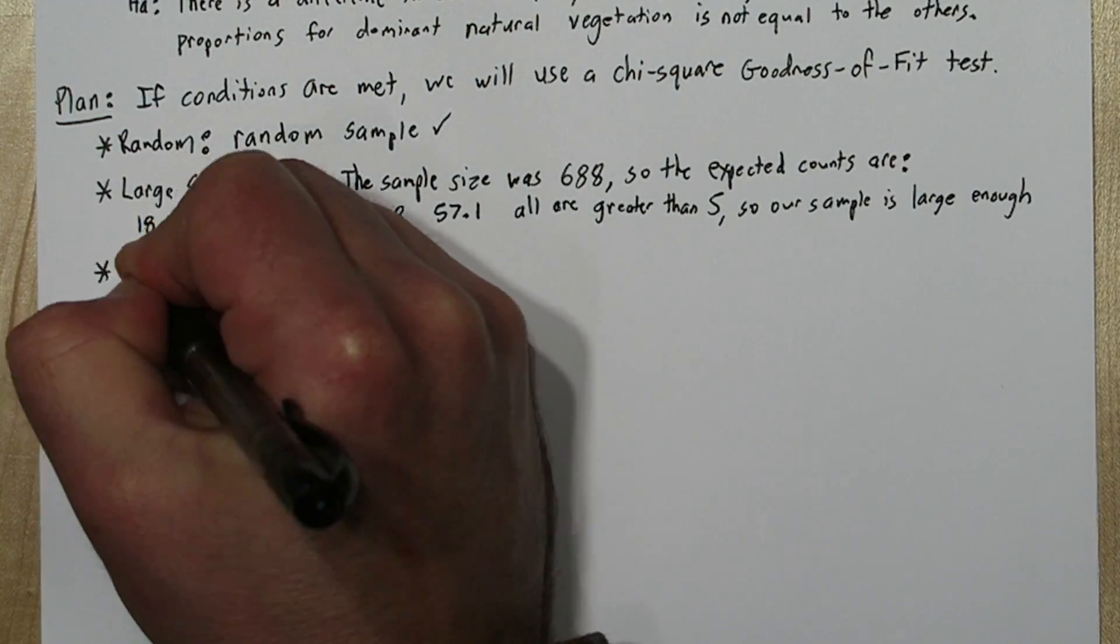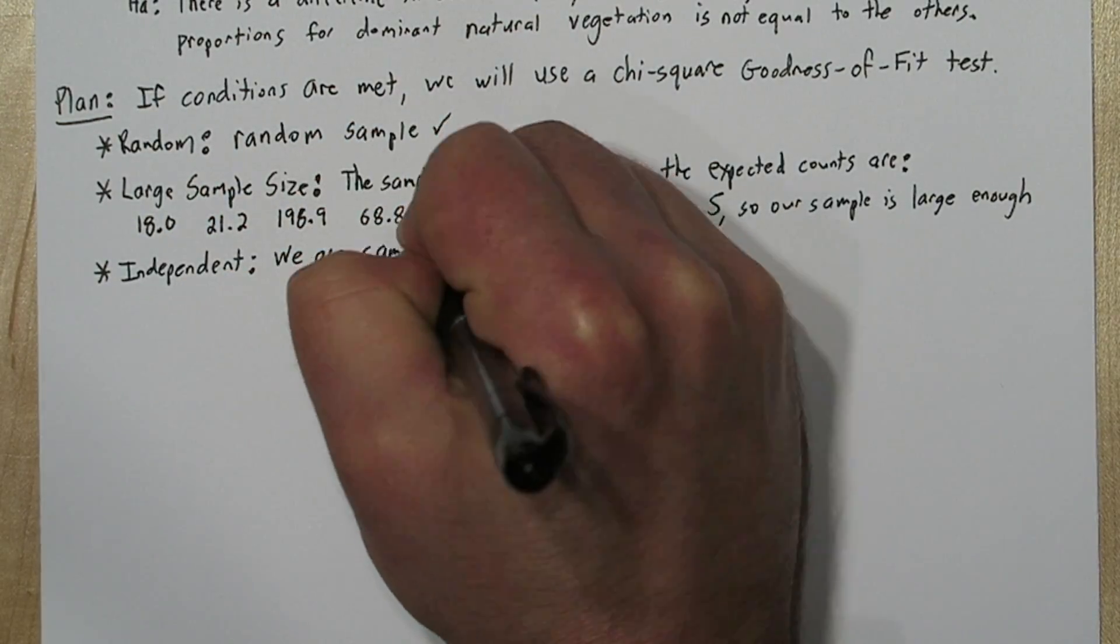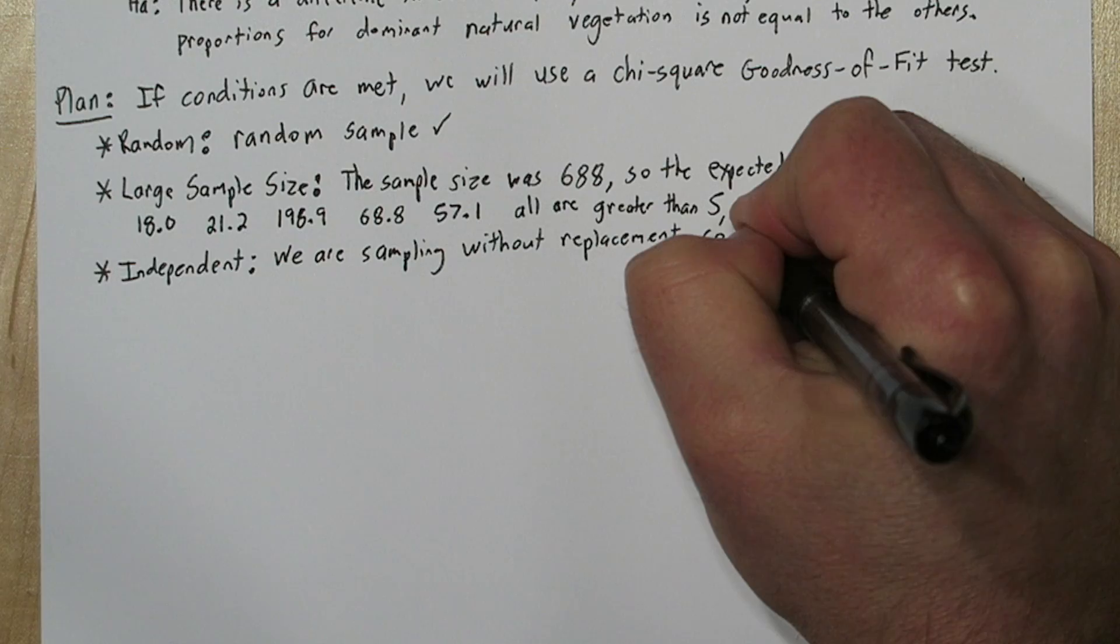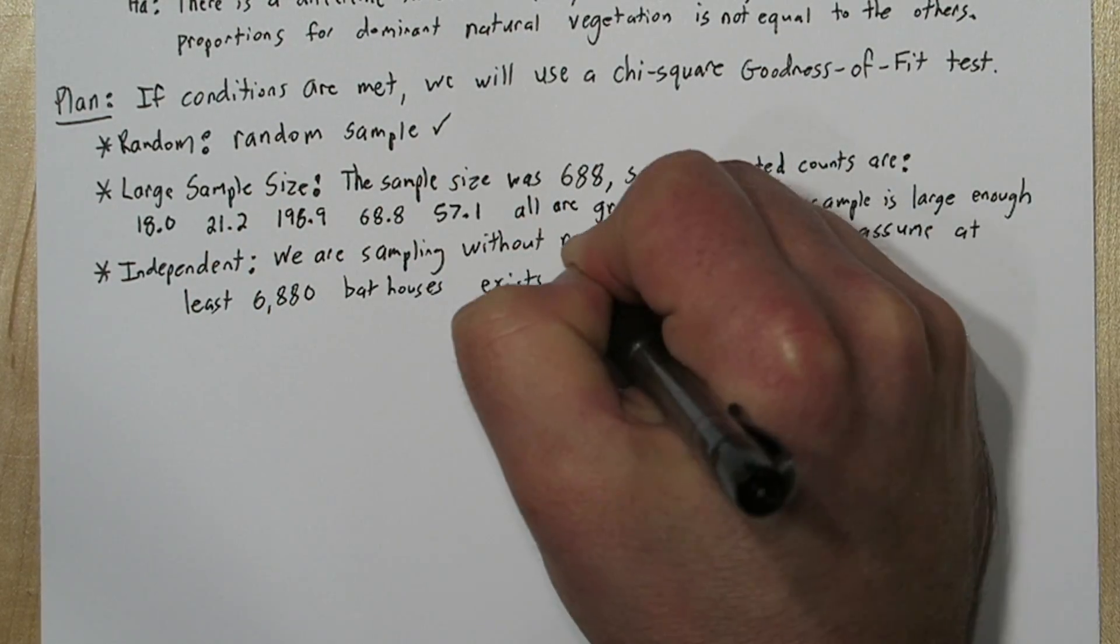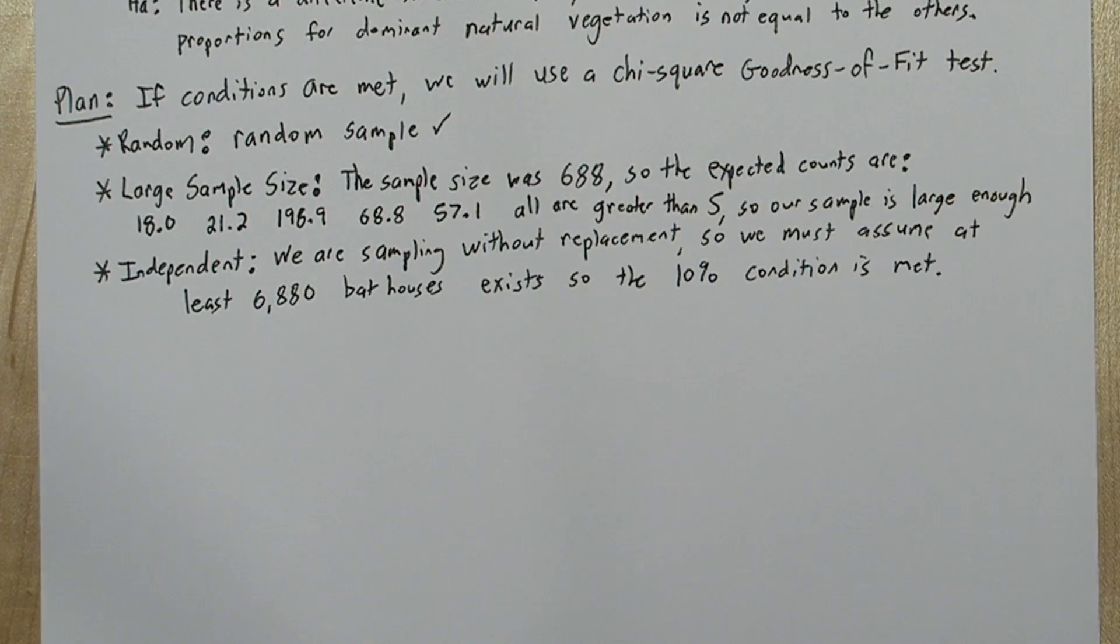For the independent condition, since we're sampling without replacement, we need to check the 10% condition. So as long as we assume there's at least 6,880 bat houses, the 10% condition is met. Now we're ready for the do step.